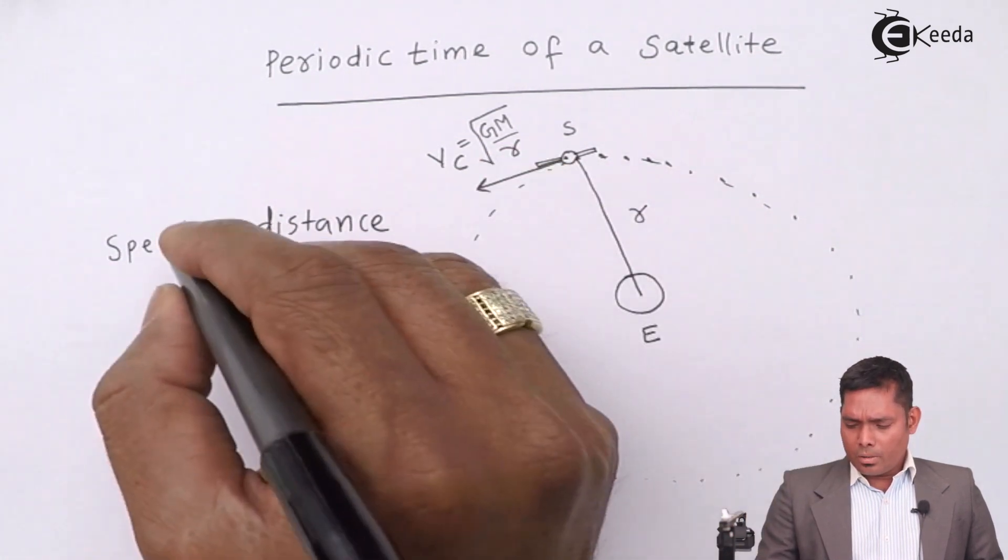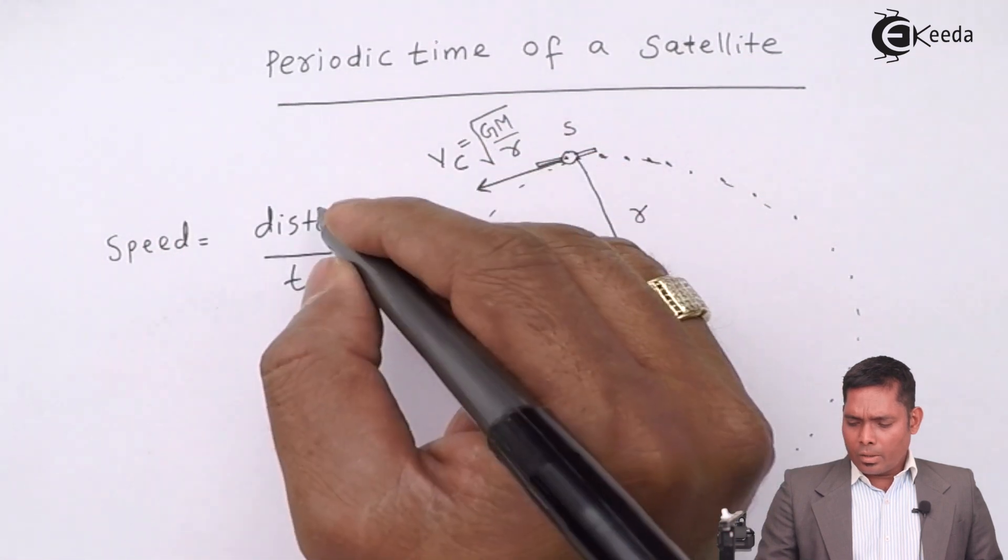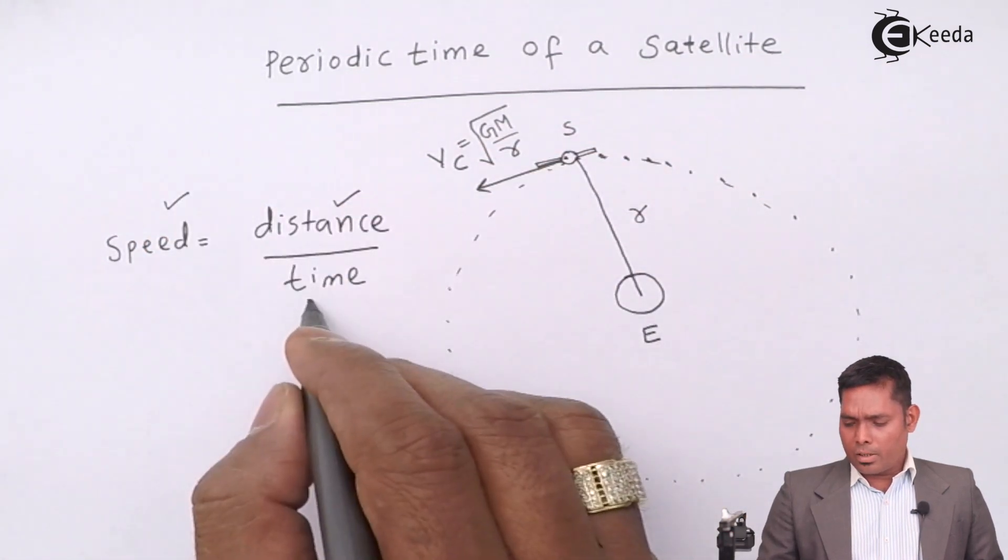That means I know the speed, this one, I know the distance. I know this and I know this, so I can find this one.